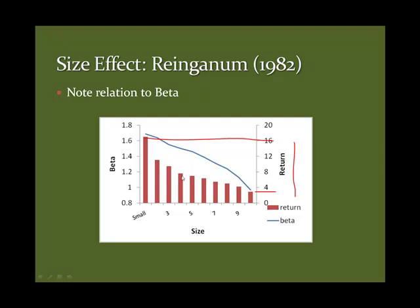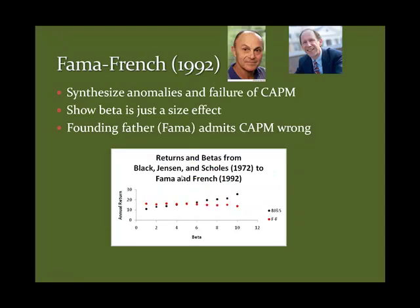In the 80s, lots of people were trying to figure this out. Fama and French in 1992 really synthesized it. They said if you control for size, beta goes away. What we documented before — these black dots going up — the red dots are what we actually see after you control for size. If you cross-tab by size, the real relationship is flat, if not negative.